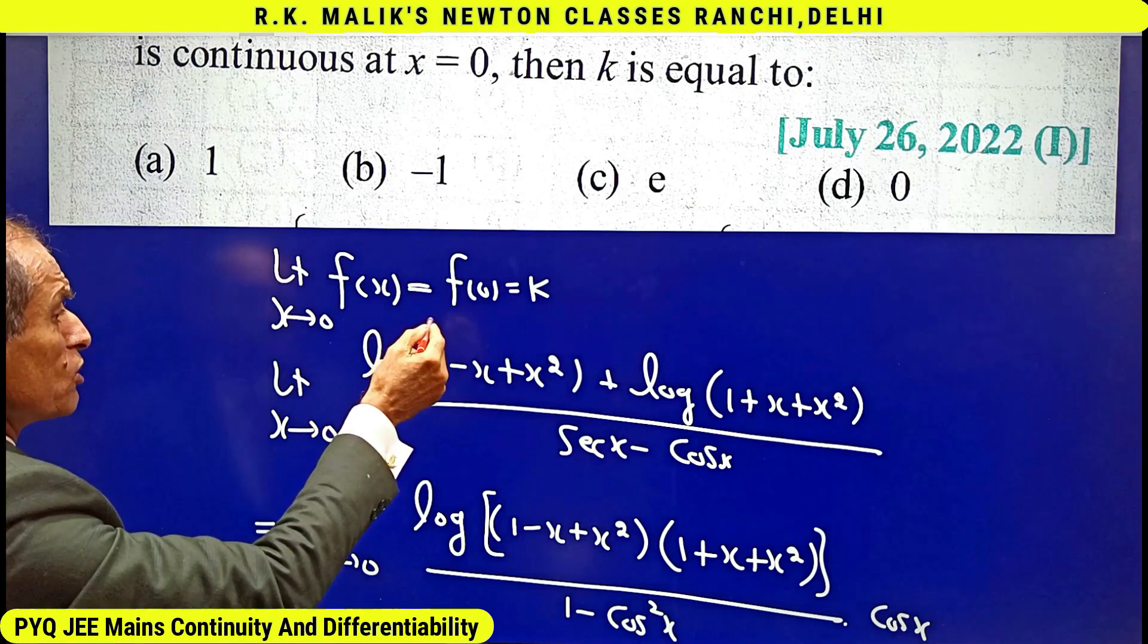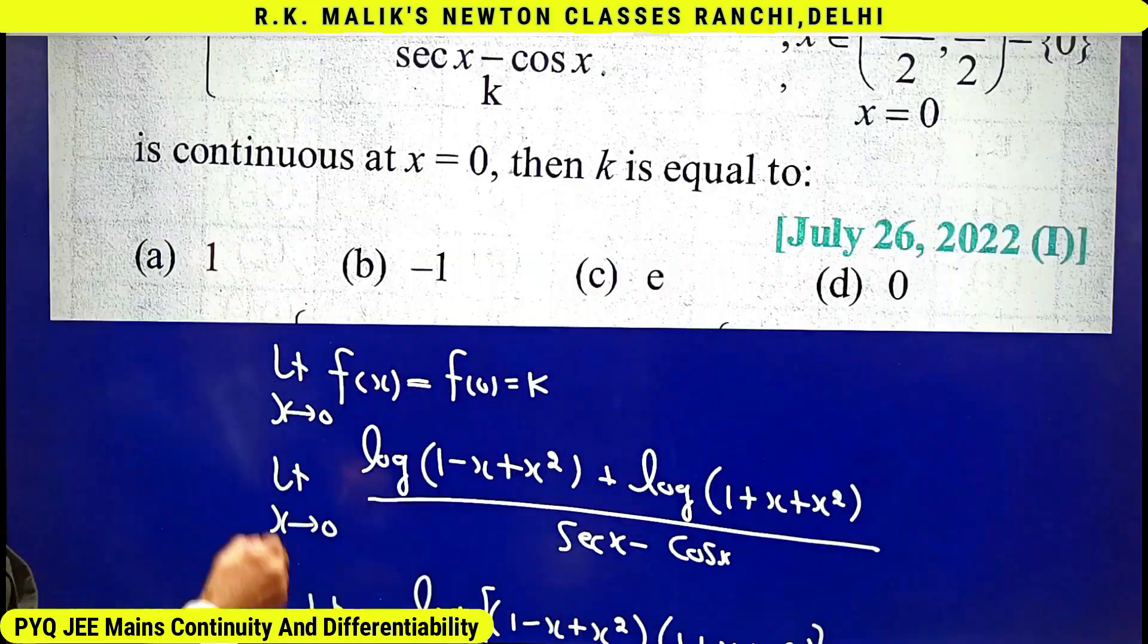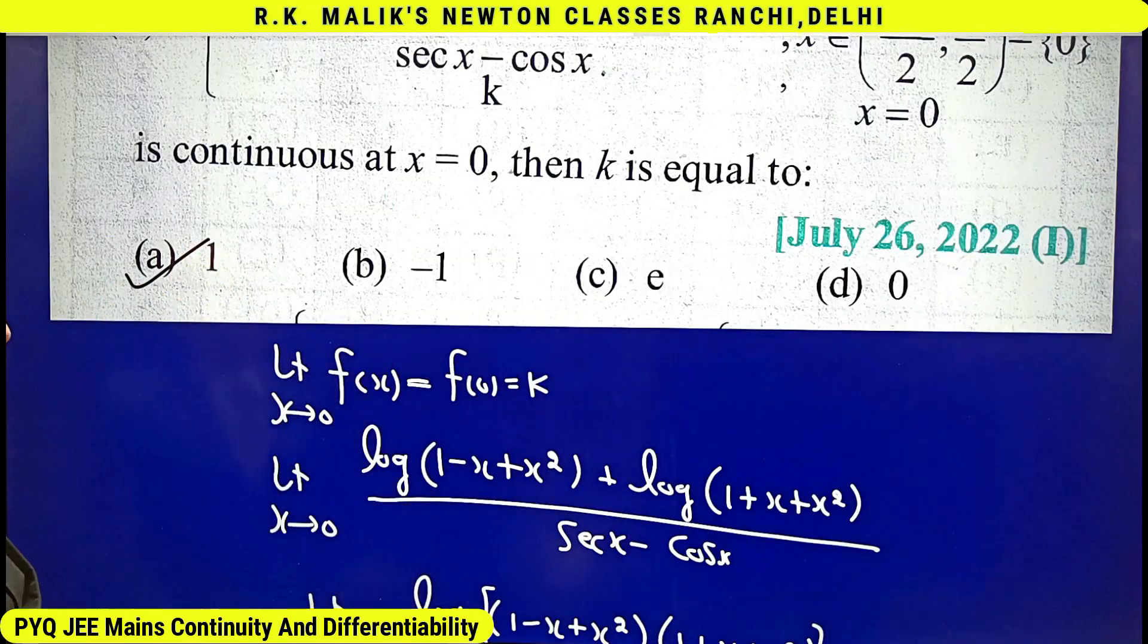Therefore, for the function to be continuous, the value of f(0), that is k, should be 1. Hence, I can say (a) is the correct choice.